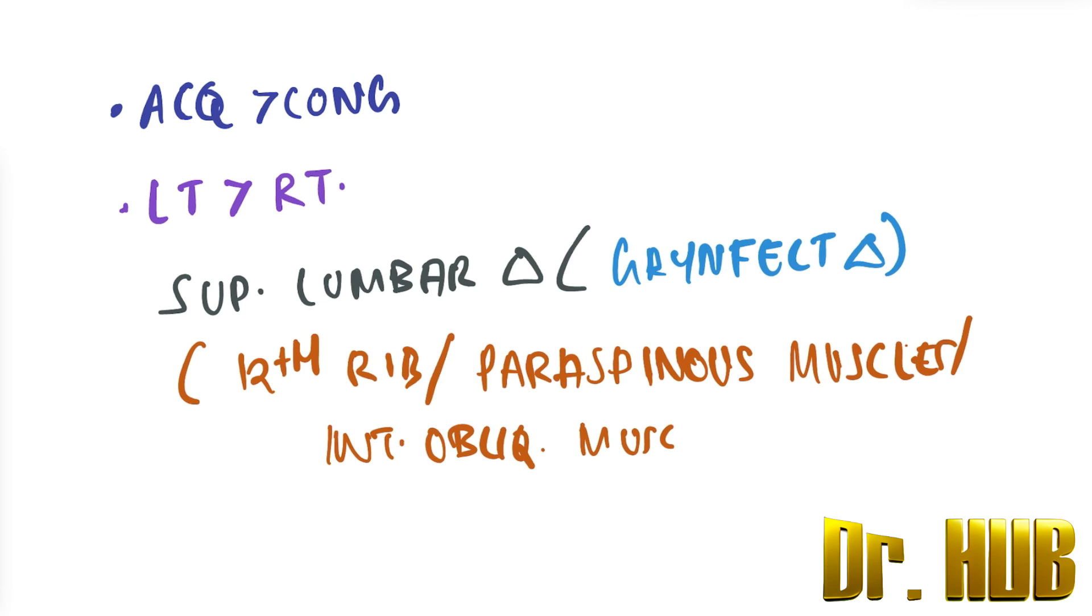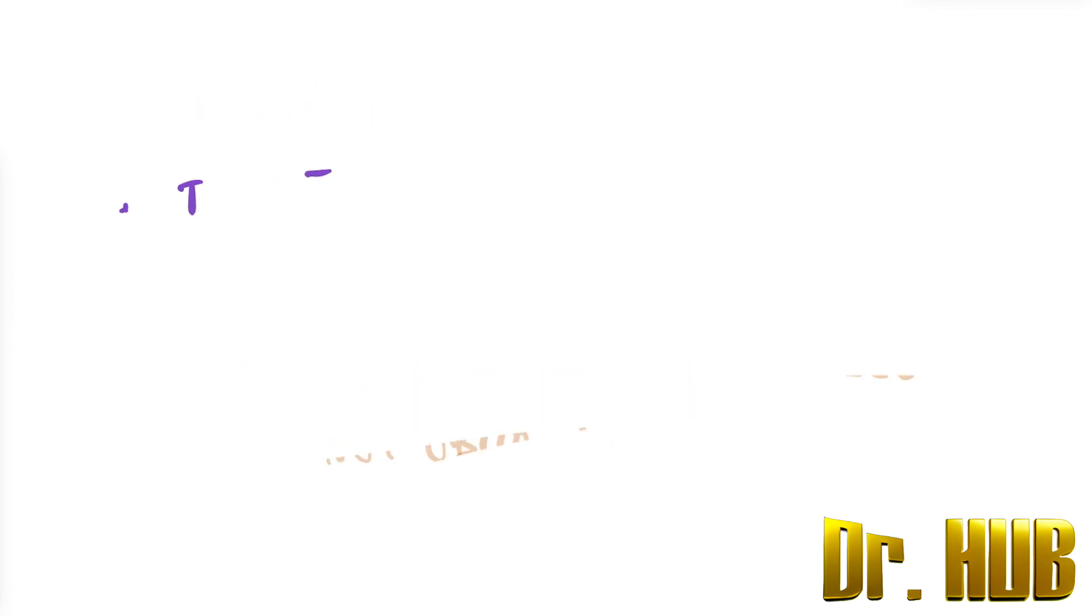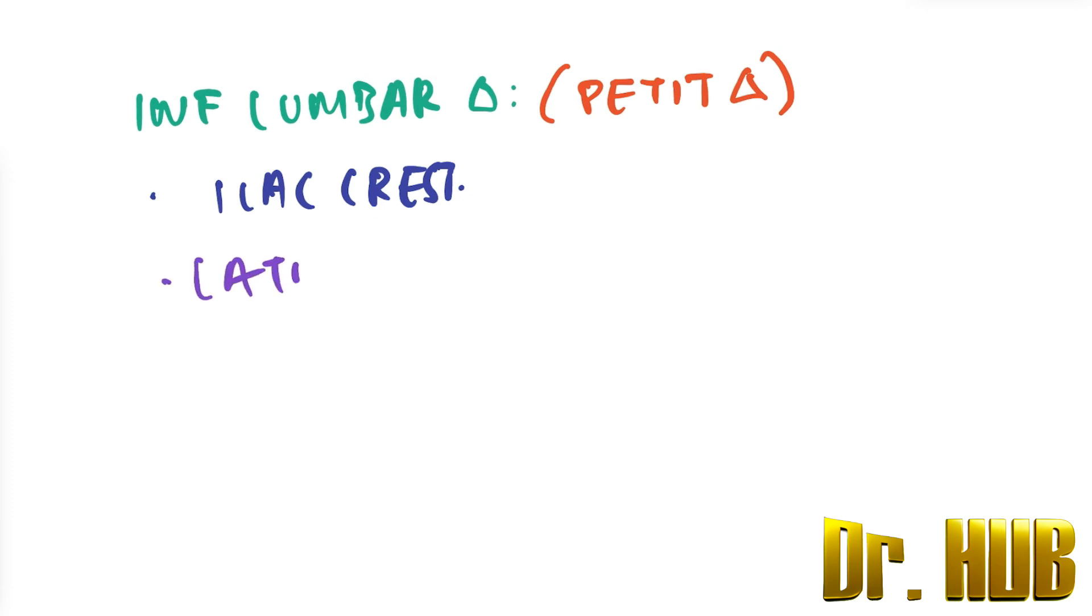Next we'll look at the inferior type. So in terms of the inferior variety, the inferior lumbar triangle is nothing but the Petit triangle. This is bounded by the iliac crest and the latissimus dorsi muscle, as well as the external oblique.